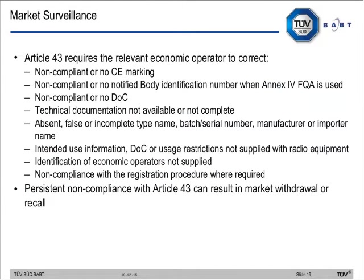There are specific market surveillance requirements. Common non-compliances found by market surveillance organisations include problems with CE marking, no notified body identification number when the FQA procedure is used, technical documentation not available or incomplete, incorrect marking such as type name or serial number, and manufacturer or importer name missing. Intended use information and identification of economic operators not supplied, or non-compliance with the registration procedure, are also issues. The directive allows for market withdrawal or recall for persistent non-compliance.